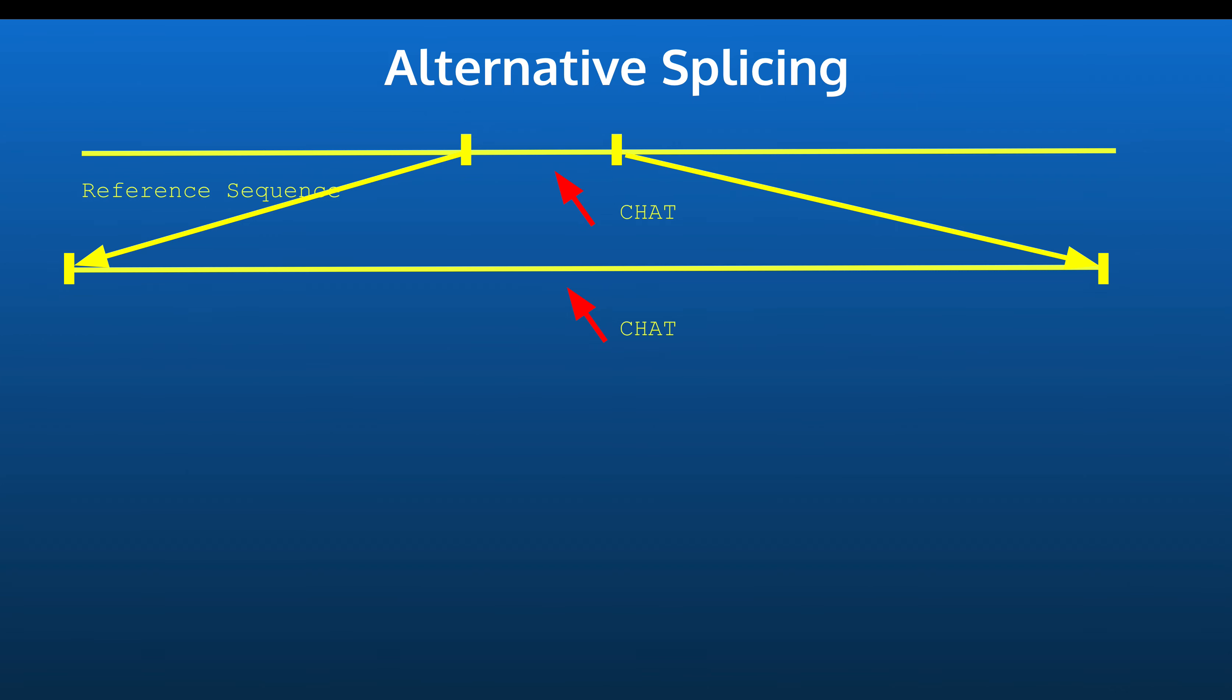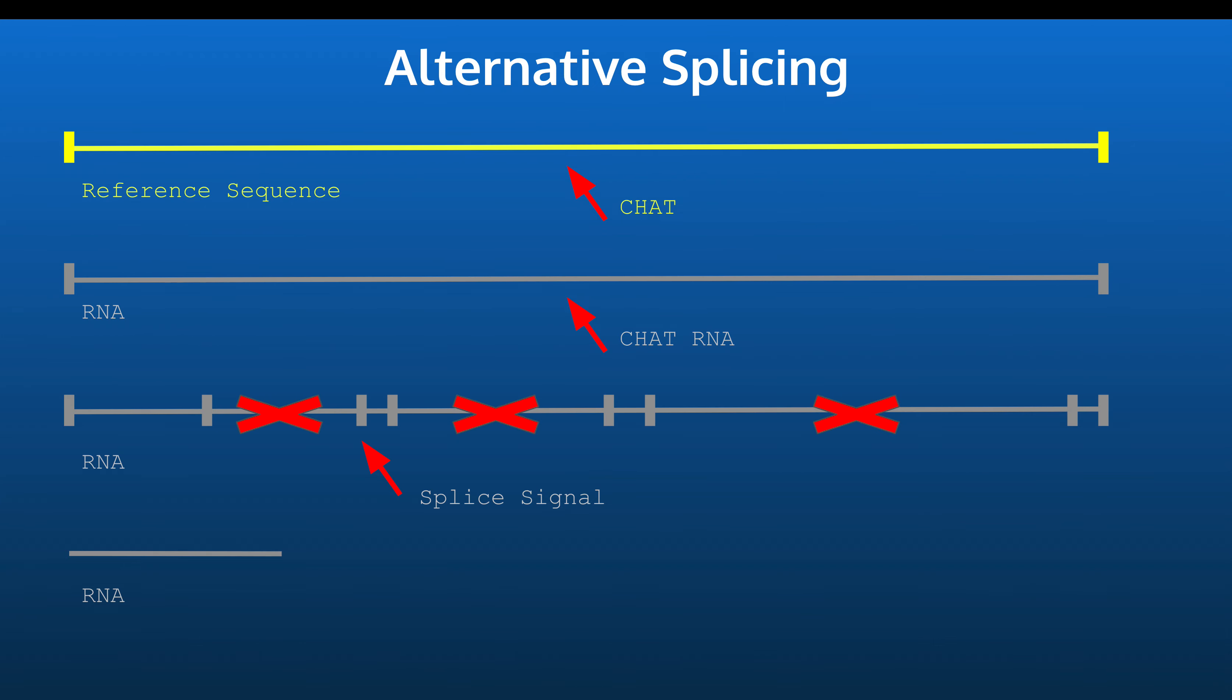One particular application is alternative splicing, which is the process that we're going to next discuss in the context of CHAT. So this diagram just shows that in terms of the reference sequence, I'm expanding in and I'm specifically going to look at just this CHAT region. What happens, as I mentioned, is that the CHAT DNA region is copied word for word or letter for letter, I should say, into CHAT RNA. And as you can see, there's the CHAT RNA in gray.